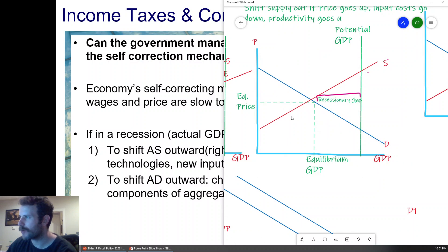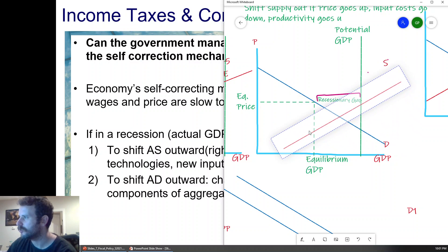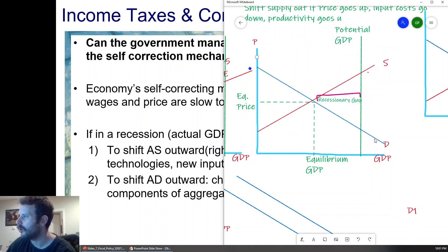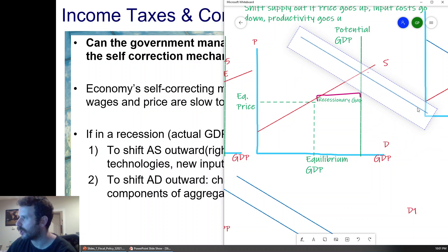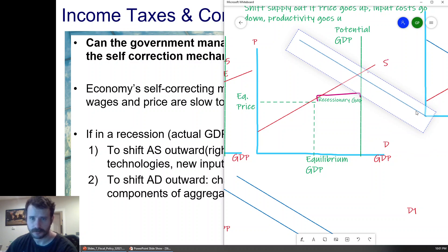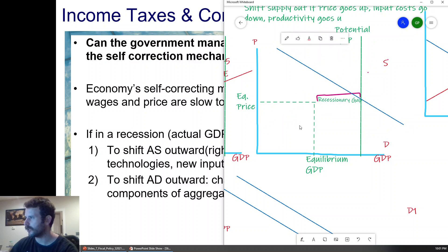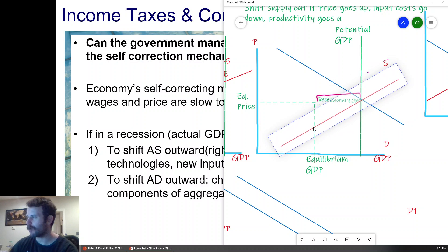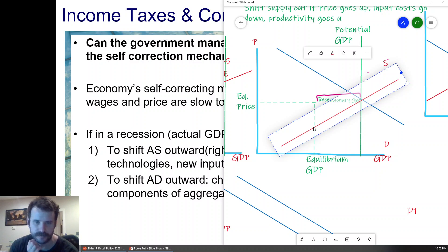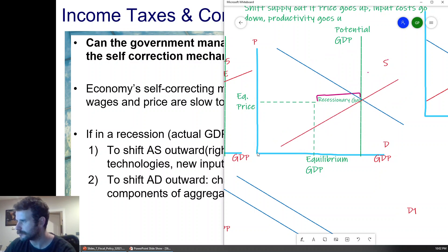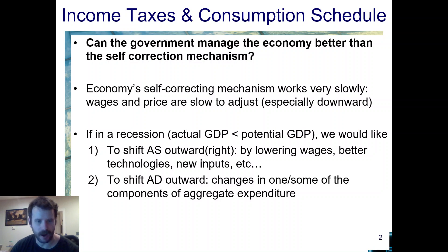So we're in a recessionary gap. We could correct it with a supply shift outwards, leading to deflation, or a demand shift outwards — probably somewhere in between would be the sweet spot. If we could have supply shift a little bit outwards while demand shifts outwards, that would be bingo — because then there's no price change at all, depending on how far it shifts. So we want some combination of aggregate supply shifting outwards and aggregate demand shifting outwards.